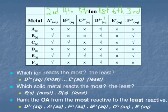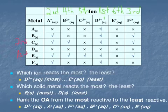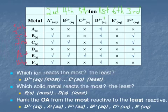Now let's also look at our reducing agents. The most reactive solid metal is E metal, because it reacted with five different ions. Followed by C metal as second most reactive, then B metal reacted with three different metal ions. Then F metal is fourth, A metal is fifth, and our least reactive metal is metal D.